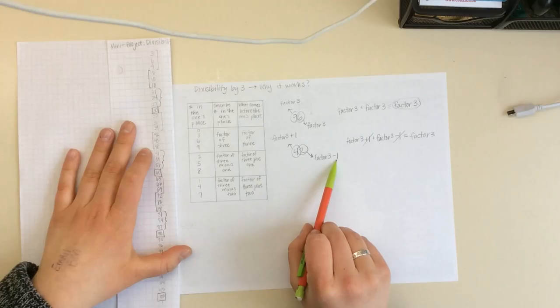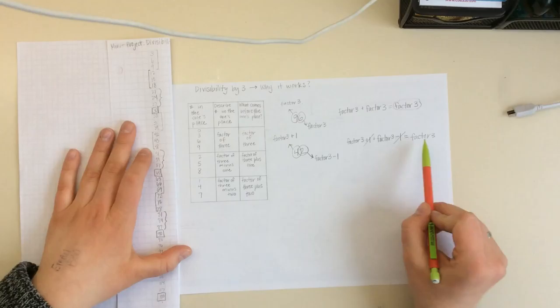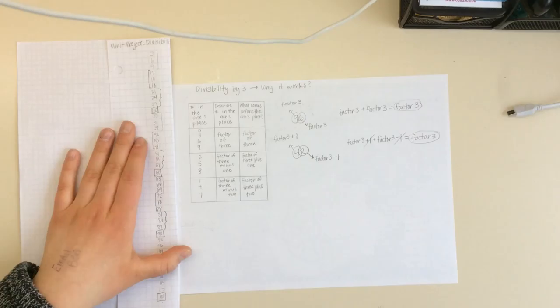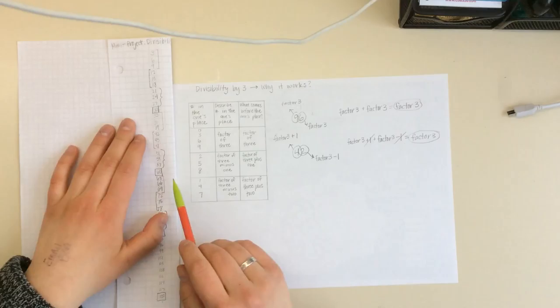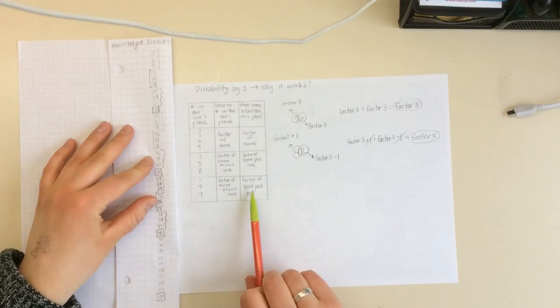So you're probably wondering, how does that work out? Well, if we write it out and we have a factor of 3 plus 1 plus another factor of 3 minus 1, that's going to give us another factor of 3. Because these plus 1 and the minus 1 will cancel out. Because we know that 2 is 1 less than 3 and 4 is 1 more than 3, those added ones and the subtracted ones will cancel out, and you'll just get a factor of 3 plus a factor of 3, which we know is another factor of 3. So therefore, that number would be divisible by 3.